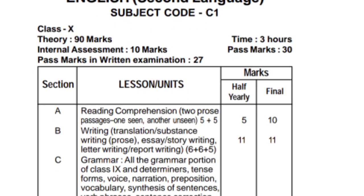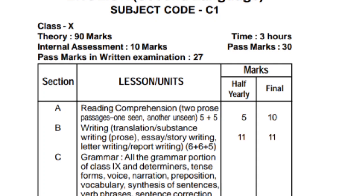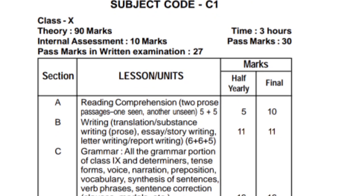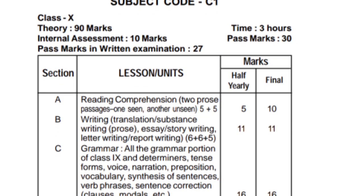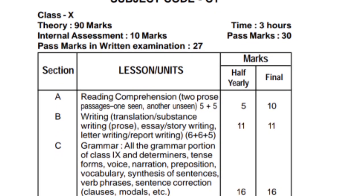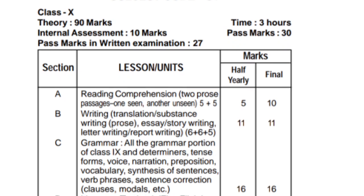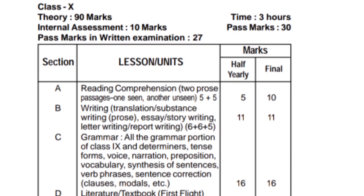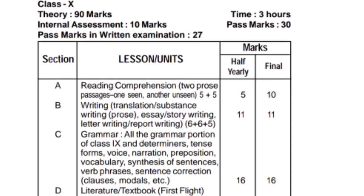For reading comprehension, there are two prose passages — one scene and another one scene. This is half field five marks. So this is a half field five marks. Half field is ten marks total — ten marks.